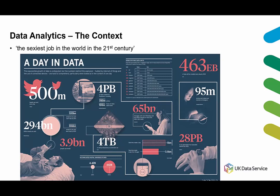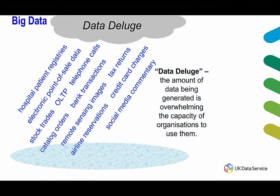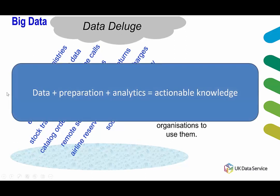Here's a graph of one day in data. Around 500 million tweets are generated each day, and on Facebook, around four petabytes of data are generated, including 350 million photos and 100 million hours of video watching time. It is fair to say that the phrase 'big data' is not an exaggeration — we are facing a real data deluge, where the amount of data being generated is overwhelming the capacity of organizations to use it. Raw data itself is not a treasure; only with good preparation and proper analytics can it provide actionable knowledge.